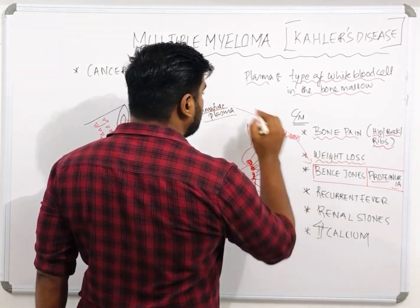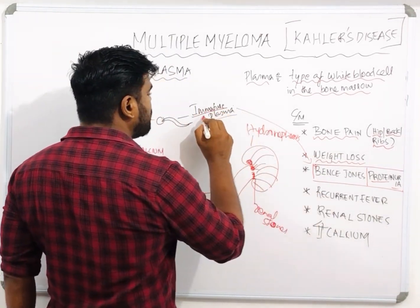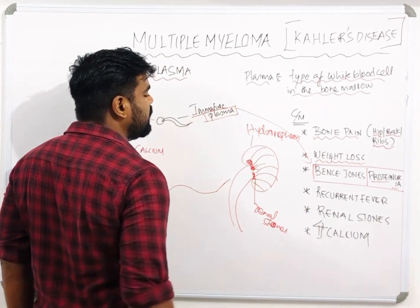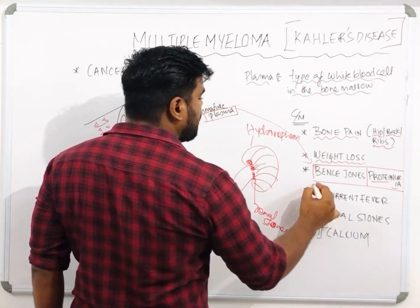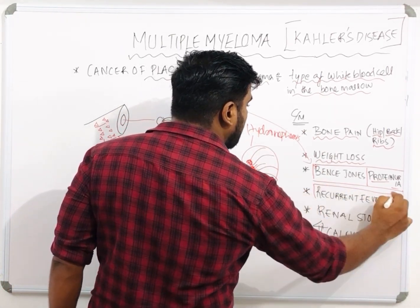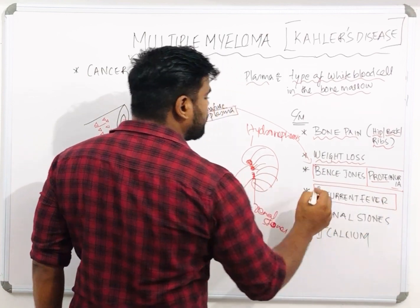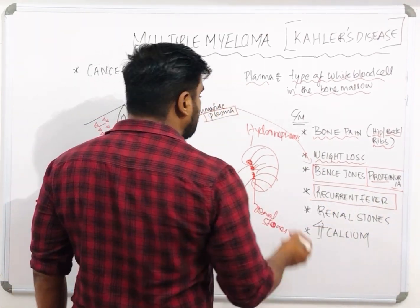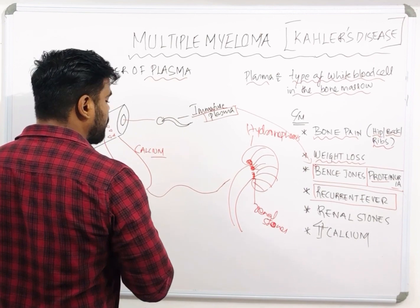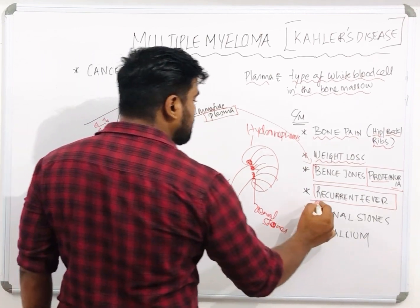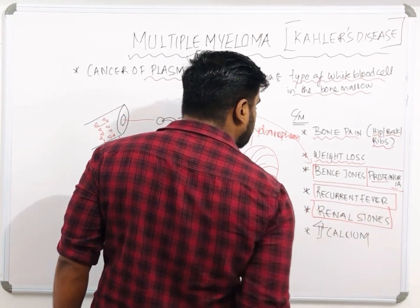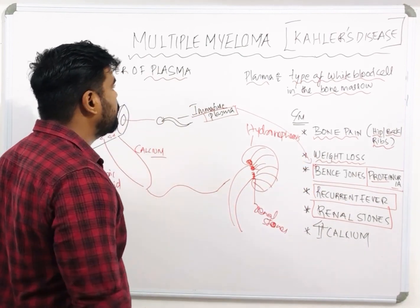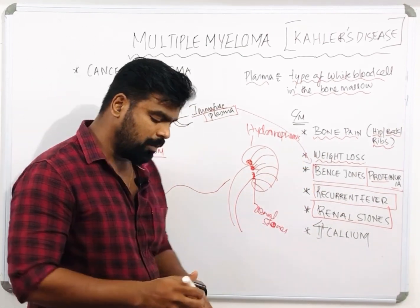Once the plasma is immature, our immunity will be low, which can lead to low immunity and recurrent infection, which leads to recurrent fever. And due to excessive calcium and uric acid there is a chance for renal stone formation. These are the symptoms of multiple myeloma.